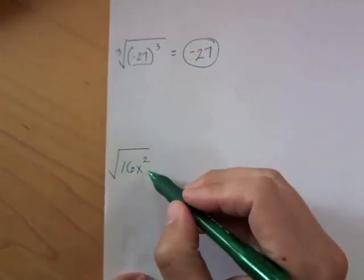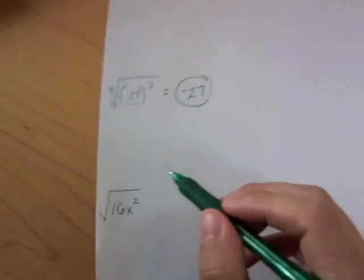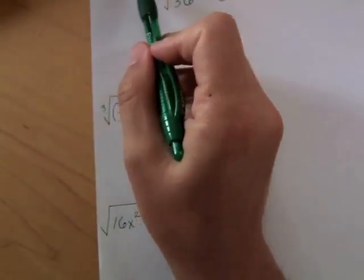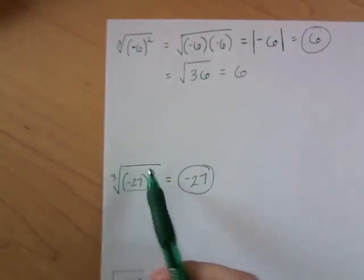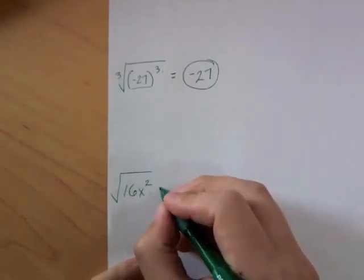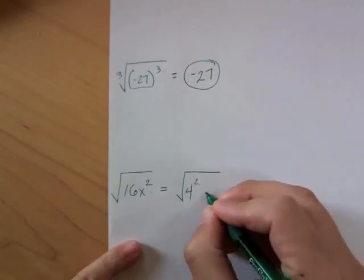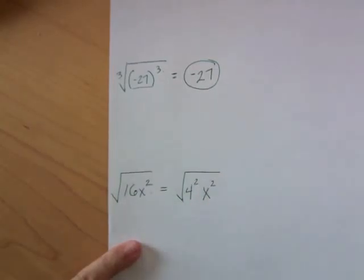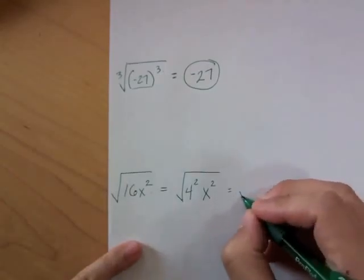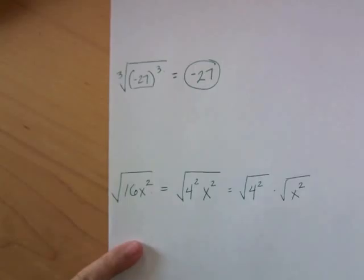Now let's look at the square root of 16x². It may look at first like this doesn't follow the same pattern, because the x is squared but 16 is not. However, we can do something tricky: 16 is the same thing as 4 squared. So we can rewrite this as the square root of 4 squared times x squared. We're allowed to split this into two different radicals using our radical rules.